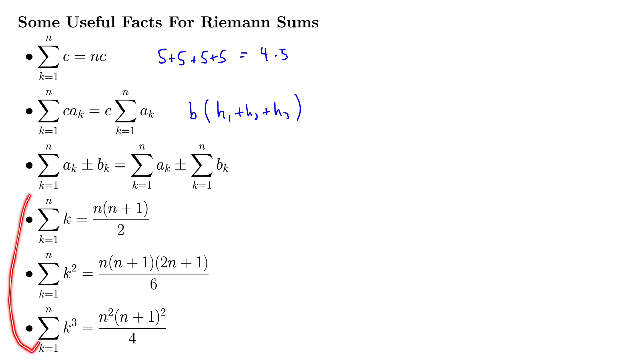Now, these last three are much different. This gives us the sum of k, the sum of k squared, and the sum of k cubed in these nice finite sums. So, for instance, the sum of k is n times n plus 1 all over 2.